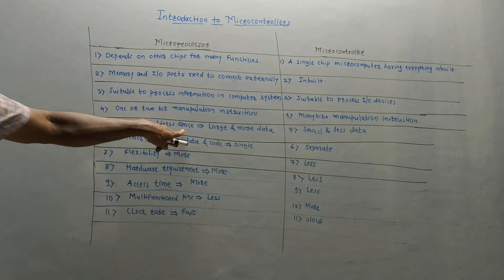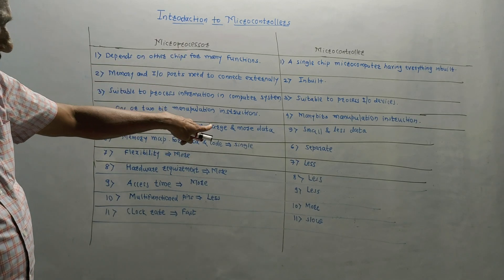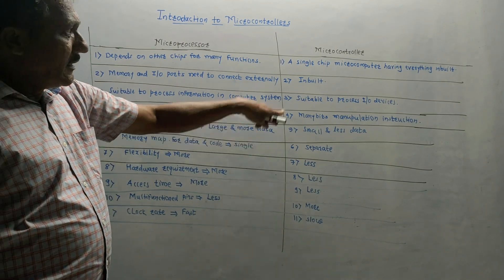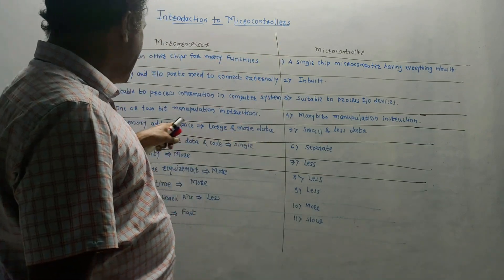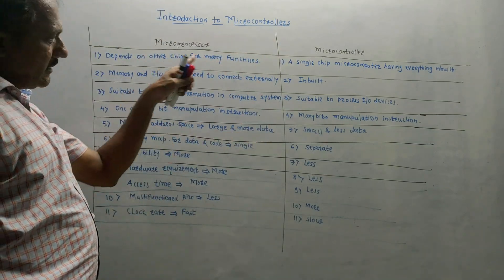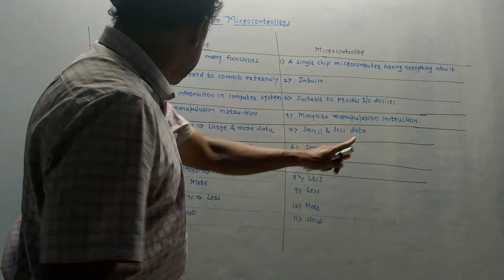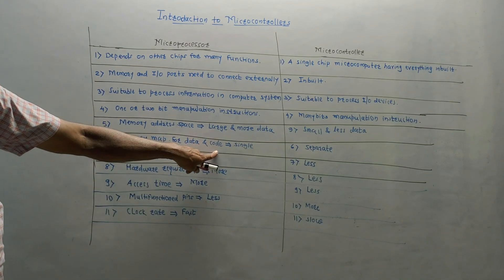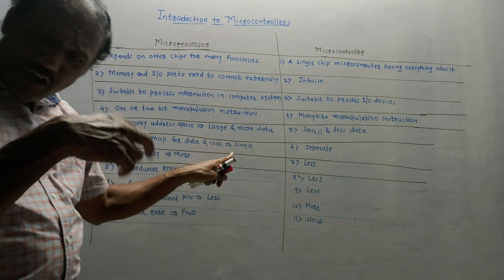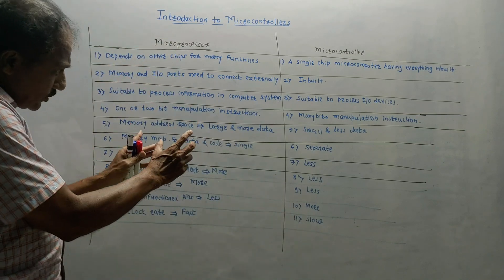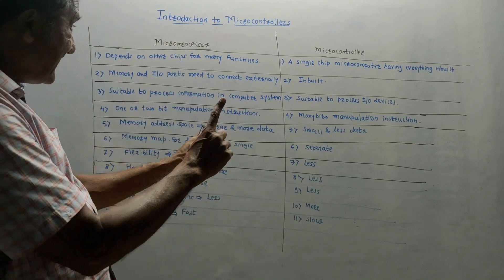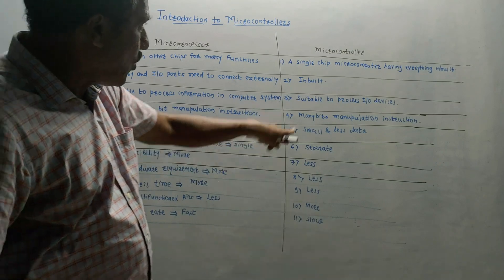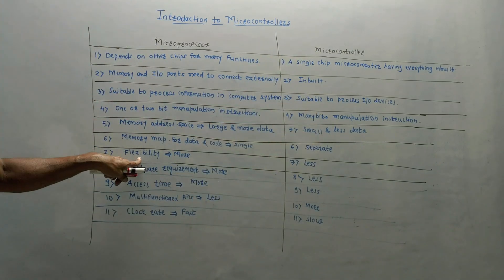Memory address space for microprocessor is large and handles more data, whereas for microcontroller, memory address space is small and it requires less data. For data and code, microprocessor makes use of a single memory map, whereas there is a separate memory map for data and code for the microcontroller.